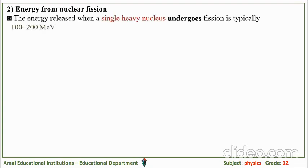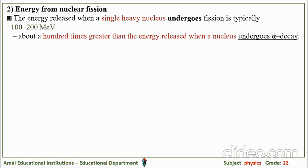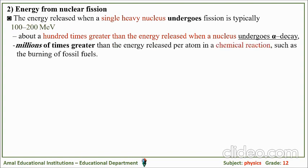The energy released in a nuclear fission reaction: the energy released when a single heavy nucleus undergoes fission is typically between 100 and 200 megaelectron volts — about 100 times the energy released when a nucleus undergoes alpha decay, and millions of times greater than the energy released per atom in a chemical reaction such as the burning of fossil fuels.